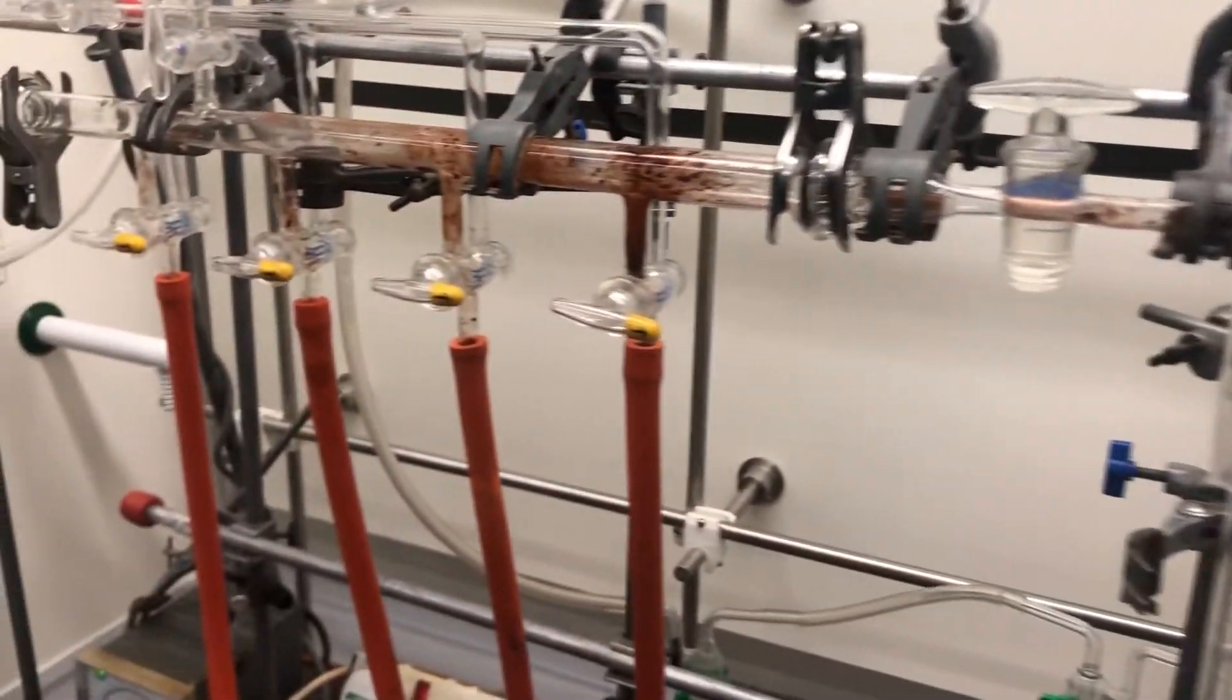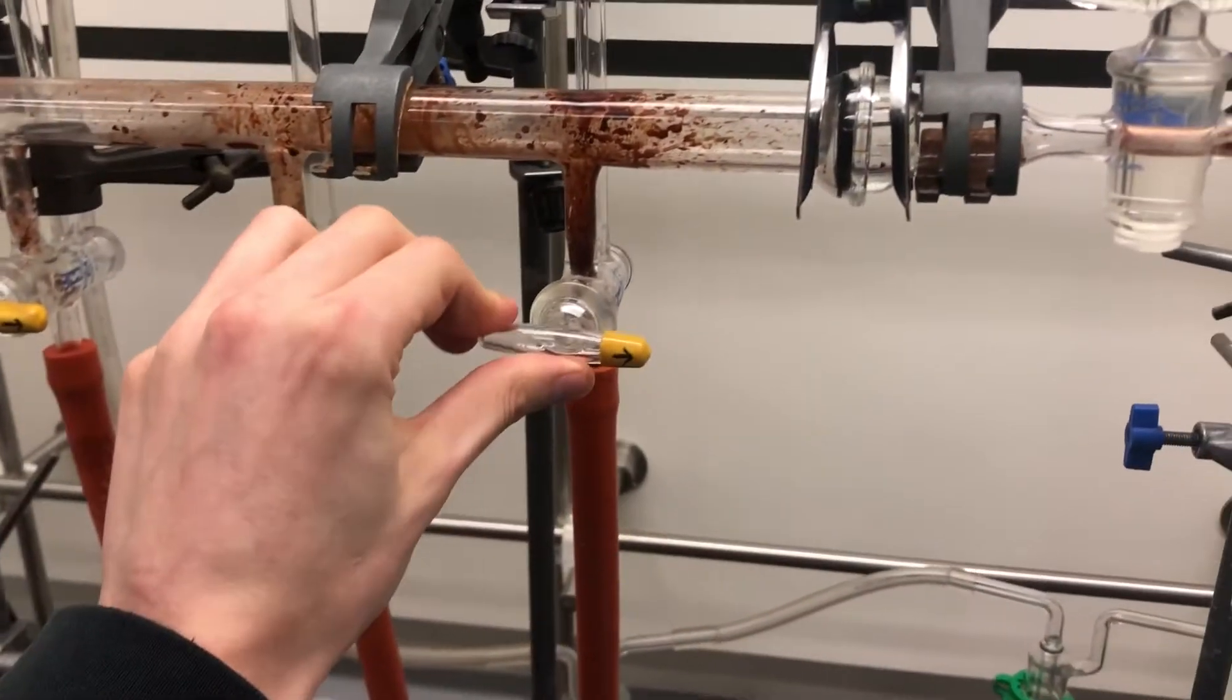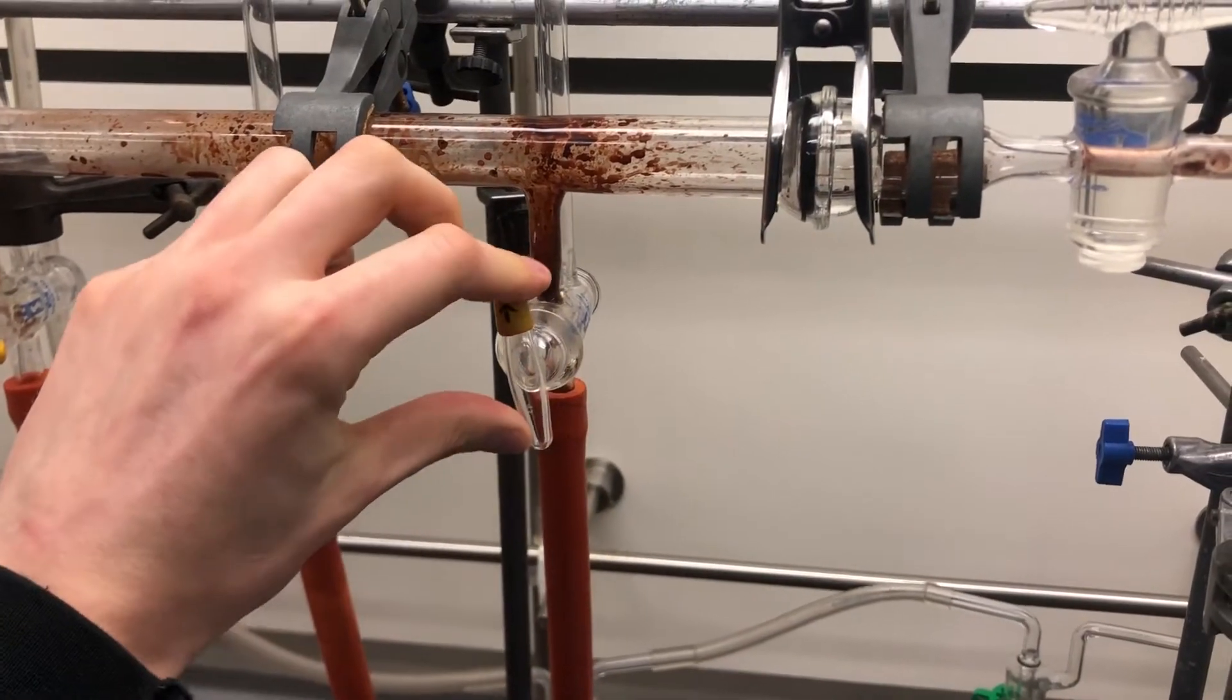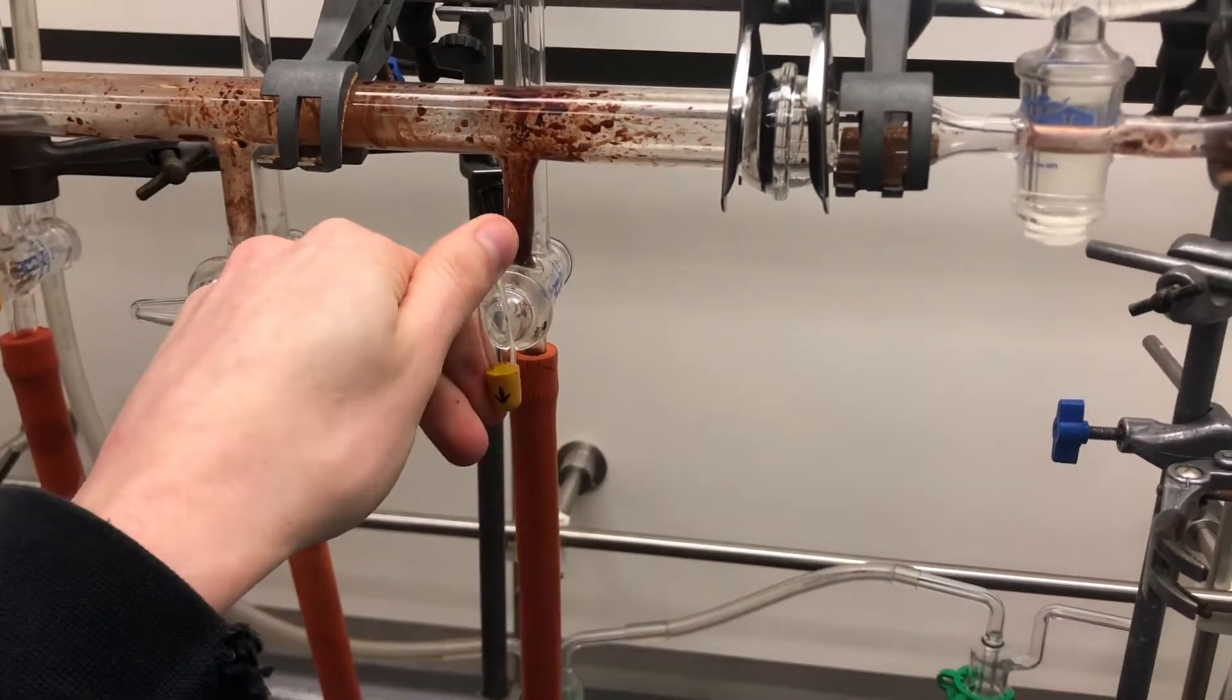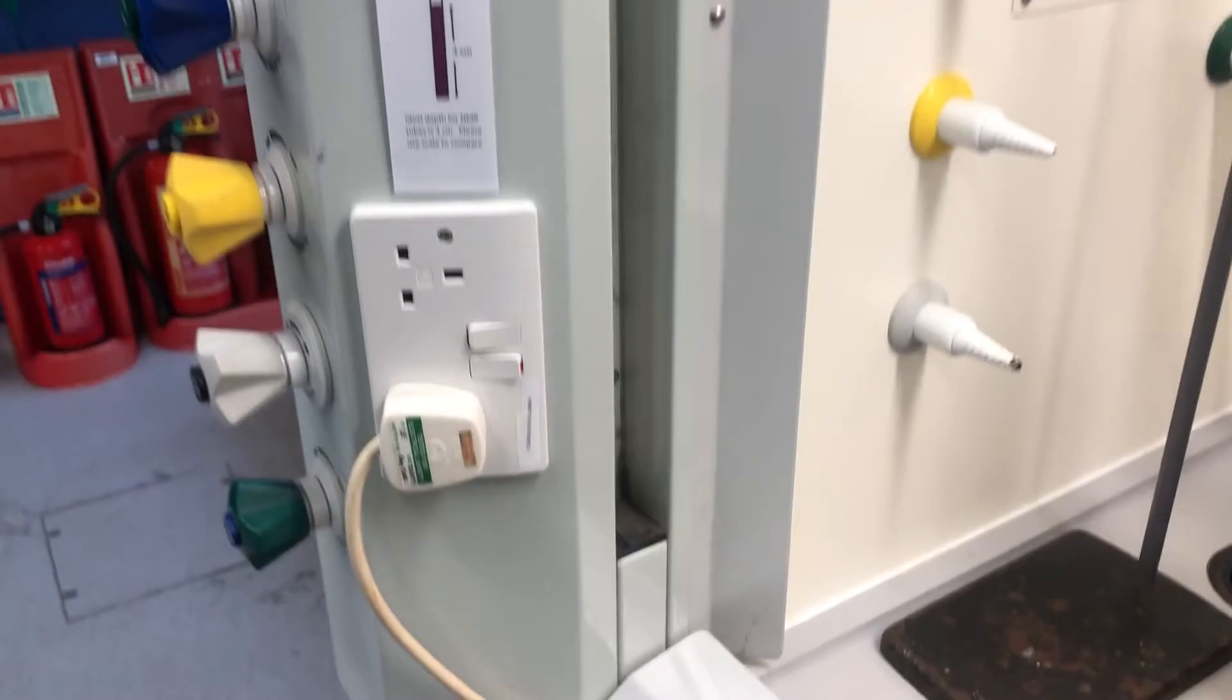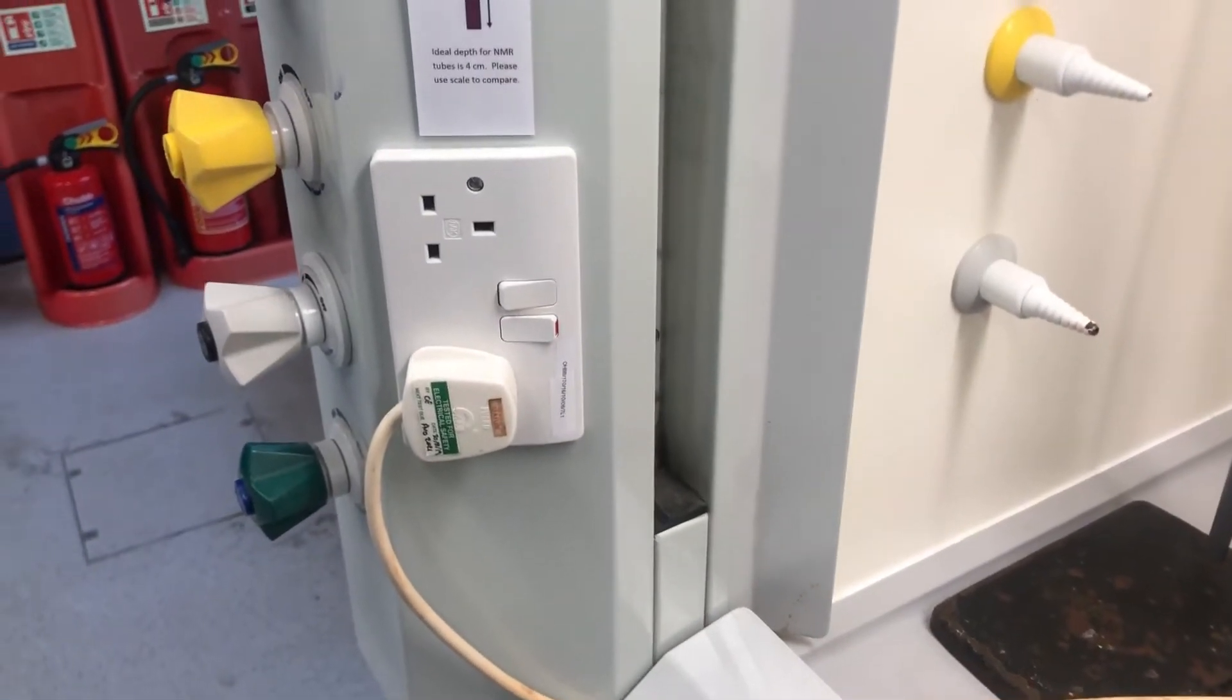All of the hoses that are attached to our system are controlled by these double oblique taps, and the arrow denotes the direction of gas flow and connects either to the vacuum manifold or the nitrogen line, which we can see here.